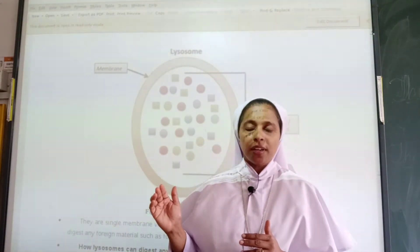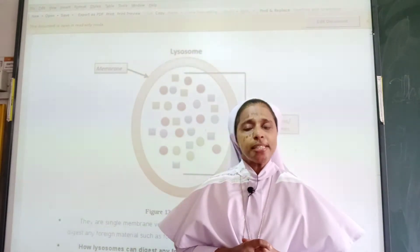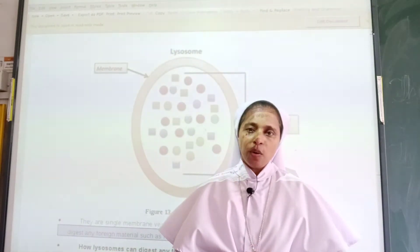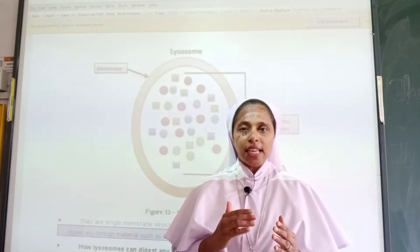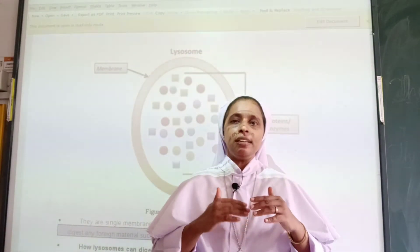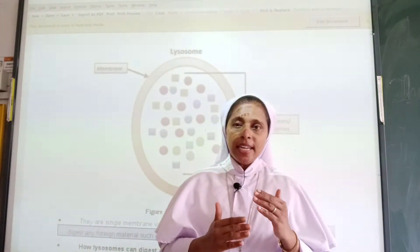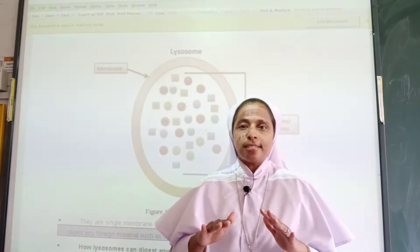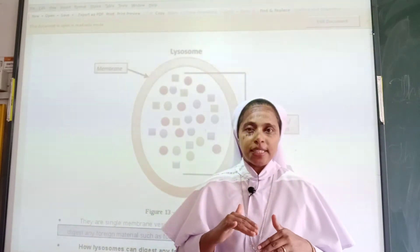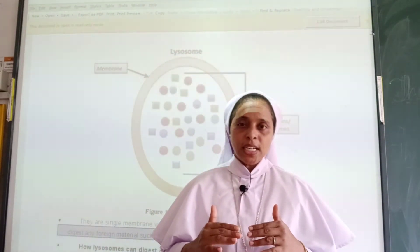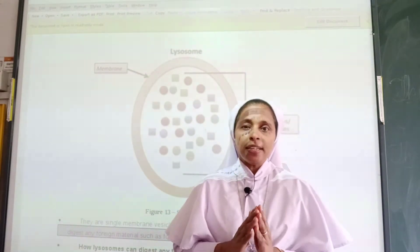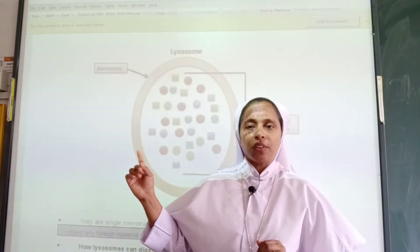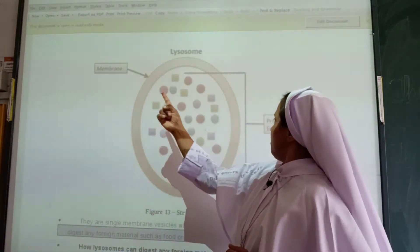Golgi bodies are a cell organelle. Why is the lysosome called a suicide bag? We often call the lysosome a suicide bag because when the cell gets damaged or dead, the lysosome bursts out and digests its own cell. There are chances that the lysosome wears out and digests its own cell. You can see here the membrane, proteins, and enzymes in the lysosome.